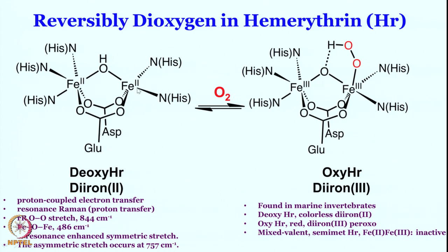As mentioned, these are found in marine invertebrates. The deoxy form of hemerythrin is colorless — diiron(II) species bridged by glutamate, aspartate, and hydroxyl, completely colorless. Upon binding with oxygen, oxy-hemerythrin forms with both irons in the +3 oxidation state, and this species is red in color. There is another intermediate possible — an iron(II)/iron(III) intermediate called semi-met hemerythrin, which is inactive.